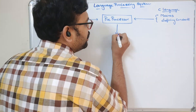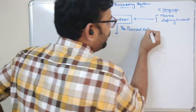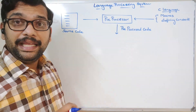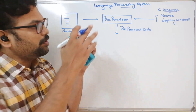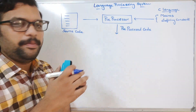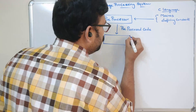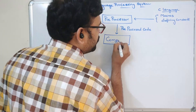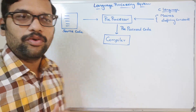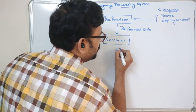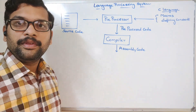After the preprocessor runs, we get the pre-processed code. It is not mandatory that every code will have macros or defined constants, but if the instructions do contain these, they will be executed in the preprocessor stage and we get the pre-processed code. That pre-processed code will then be given to the compiler, which will execute it and generate the assembly code.